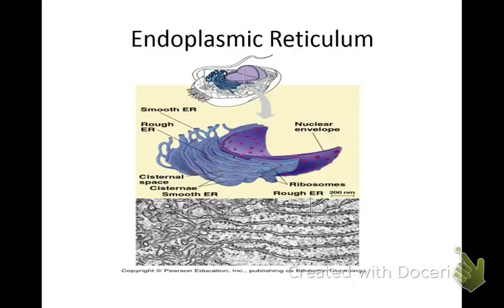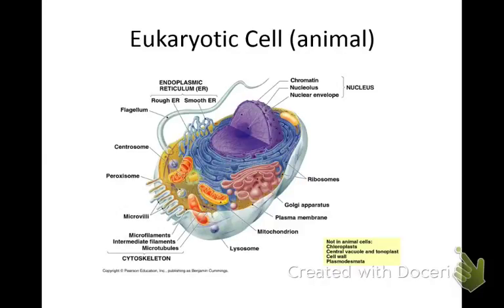Endoplasmic reticulum. This is what is going to transport those proteins you make. Remember from the last video that ribosomes make proteins. Well, after they're made, the endoplasmic reticulum — ER — transports them. It's made out of cisternae, composed of a network of small tubules. They are always right outside the nucleus. In the picture you'll see the purple nucleus, and then the ER in yellow. So the ER is always right outside the nucleus.